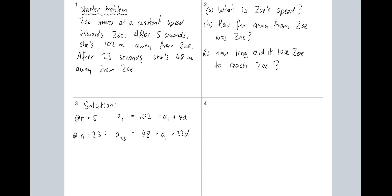We can subtract those terms from each other. The benefit is that when I subtract this line from this line, A1 and A1 will cancel out, so we don't need to know the first term yet. So we go 102 minus 48, which leaves 54. A sub 1 minus A sub 1 is zero, so that's gone.